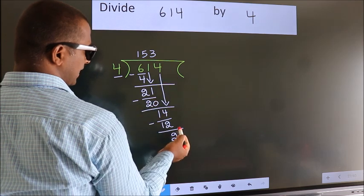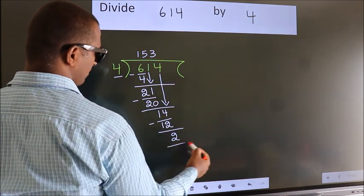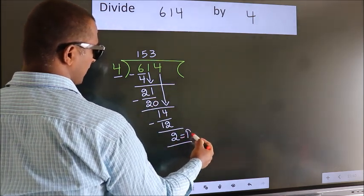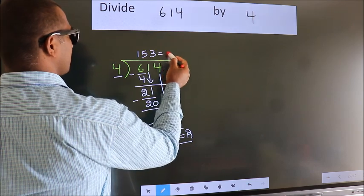No more numbers to bring it down. So we stop here. This is our remainder. This is our quotient.